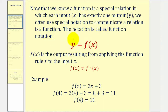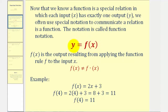For example, here we see y equals f of x. So f of x is function notation, where f of x is the output resulting from applying the function rule f to the input x. When using function notation, we need to remember that x is the input and f of x is the output, and therefore f of x is equal to y.